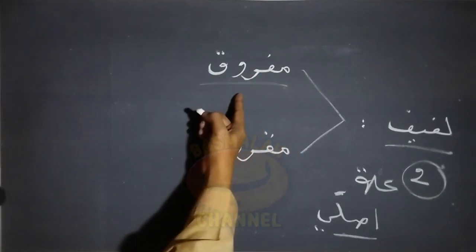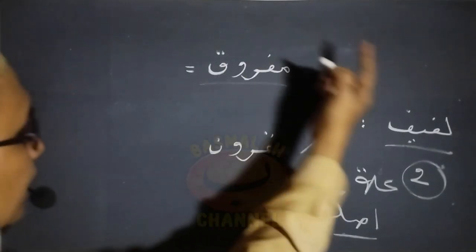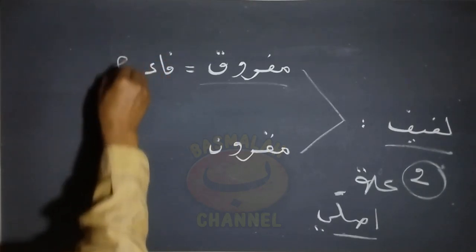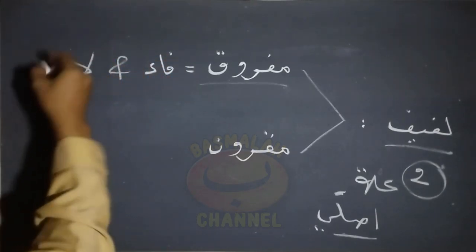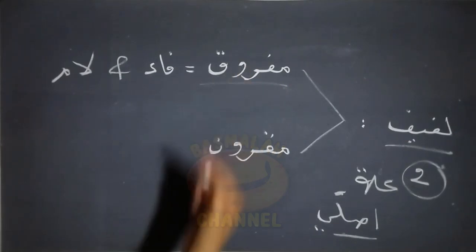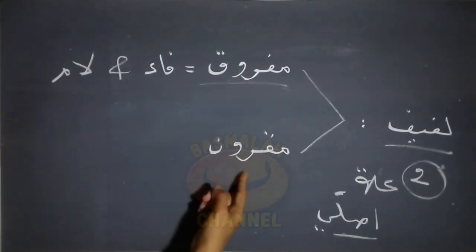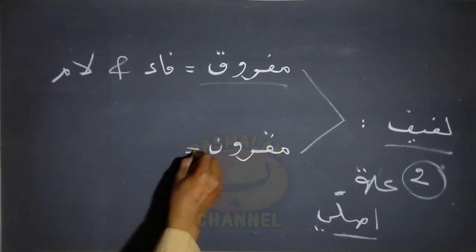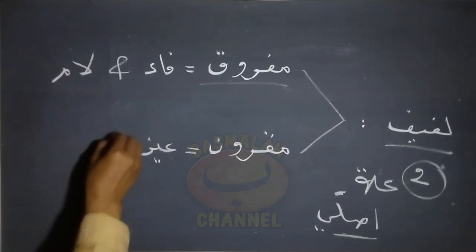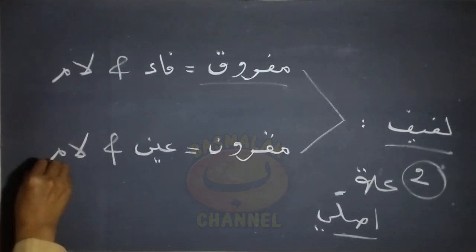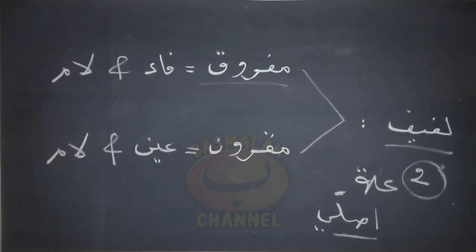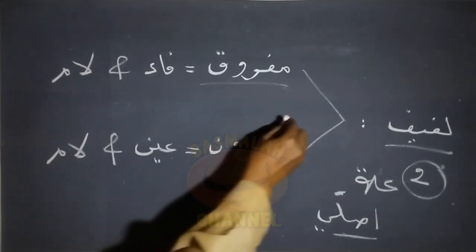Untuk mafruk, artinya terpisah, di mana huruf ilat yang ada di dalam bina' lafif mafruk ini posisinya berada pada fa'fi'il dan juga berada pada lam fi'il. Antara fa'fi'il dan lam fi'il di sini tidak bertemu langsung, sehingga di sini disebut dengan mafruk. Sementara untuk bina' lafif maqrun, posisi daripada huruf ilat tersebut terdapat pada ain fi'il dan juga lam fi'il, sehingga antara ain fi'il dan lam fi'il di sini bertemu langsung.